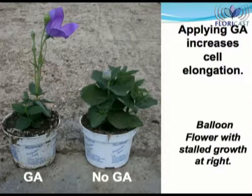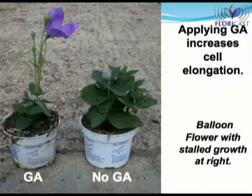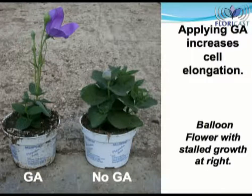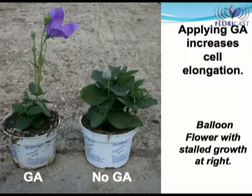You can see how applying GAs can stretch plants. In this case, the grower had balloon flower plants stall, so GA was applied to try to salvage the plant on the left. While the spray treatment was not successful, you can see how plant growth was encouraged. Note that the plant on the right was from the next plug shipment and it was growing normally.